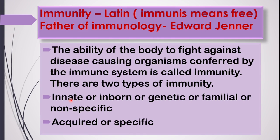The first type is known as innate or inborn immunity, also called genetic, familial, or non-specific immunity. Innate or inborn means the immunity that we are born with or that which we have inherited from our parents. It is genetic and non-specific, meaning it is conferred to us for all kinds of diseases.